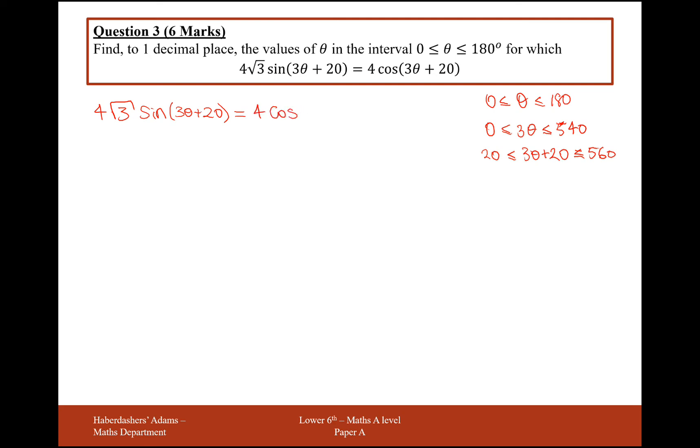There's no squares anywhere in this equation here. So what I probably need to do to change a sine and a cos into a single trigonometric function is to divide by cos. And then I'll use the identity that tan of y is equal to sine of y over cos of y. So what I'm going to do then is divide through by cos(3θ + 20). So I get 4√3 sin(3θ + 20) divided by cos(3θ + 20). And that's going to equal 4.